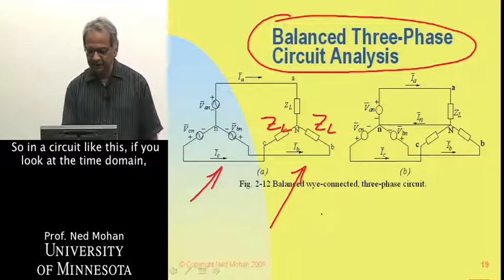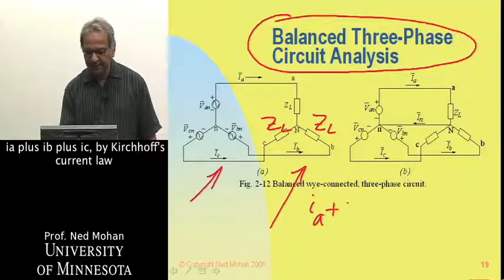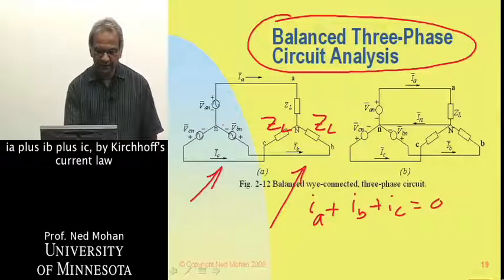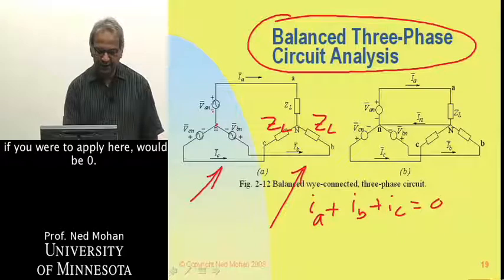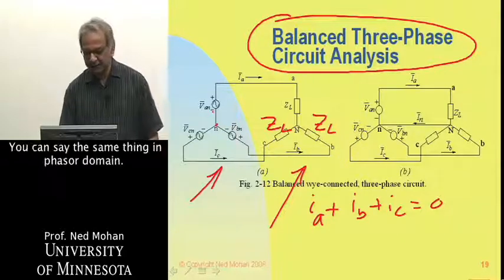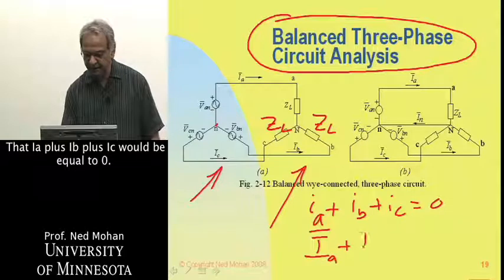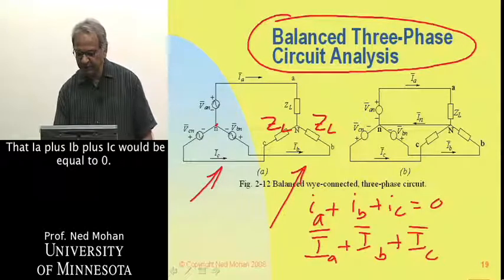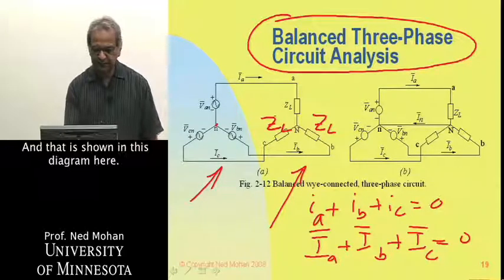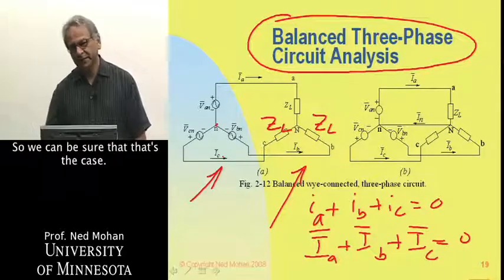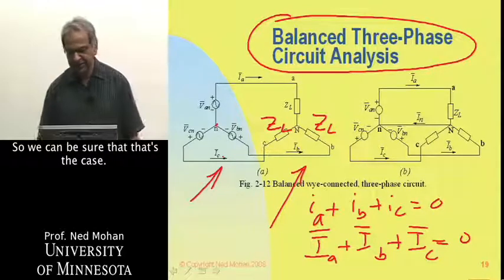In a circuit like this, if you look at it in the time domain, IA plus IB plus IC by Kirchhoff's current law, if you were to apply it here, would be 0. You can say the same thing in the phasor domain: IA plus IB plus IC would be equal to 0, and that is shown in this diagram here.